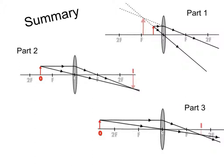In part three we moved the object even further out. What we can see now is that we still have a real image still formed by rays that cross. It's still inverted but now it's diminished, smaller than the object.